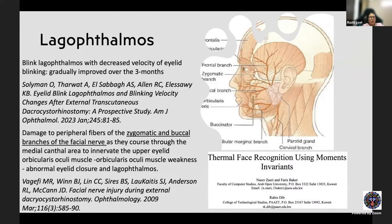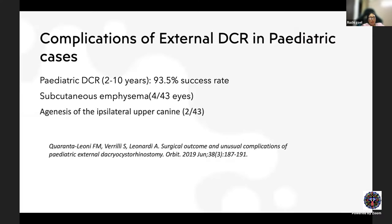In pediatric external DCR cases, one study of patients aged 2 to 10 years reported subcutaneous emphysema in some patients. A unique complication was agenesis of the ipsilateral upper canine tooth, likely because the canine root lies near the incision area. This was observed in children under three years of age who later developed ipsilateral upper canine agenesis.